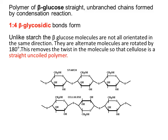Cellulose is a polymer of beta glucose. The chains are straight and unbranched, formed by a condensation reaction with only one-to-four glycosidic bonds — no side chains, no one-to-six bonds. Unlike in starch, the beta glucose molecules are not orientated in the same direction; they alternate, with one molecule rotated by 180 degrees. This removes the twists that create the helix in amylose, resulting in a straight, uncoiled polymer that lies completely flat, helping it form useful fibres.